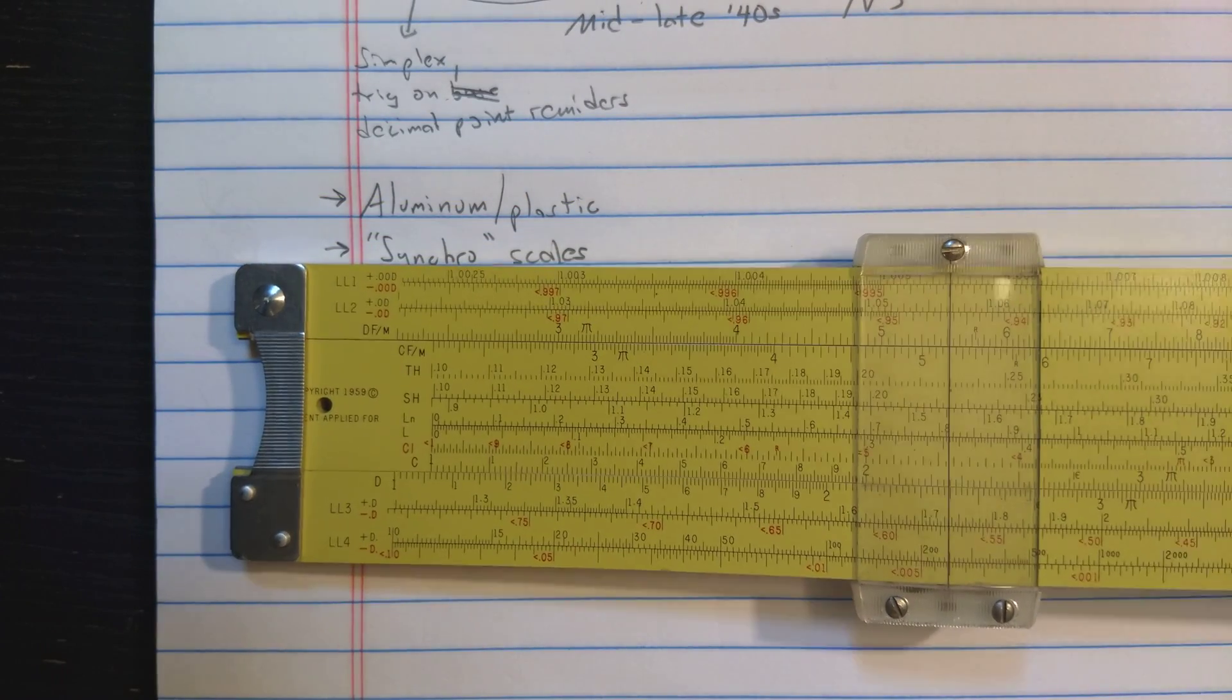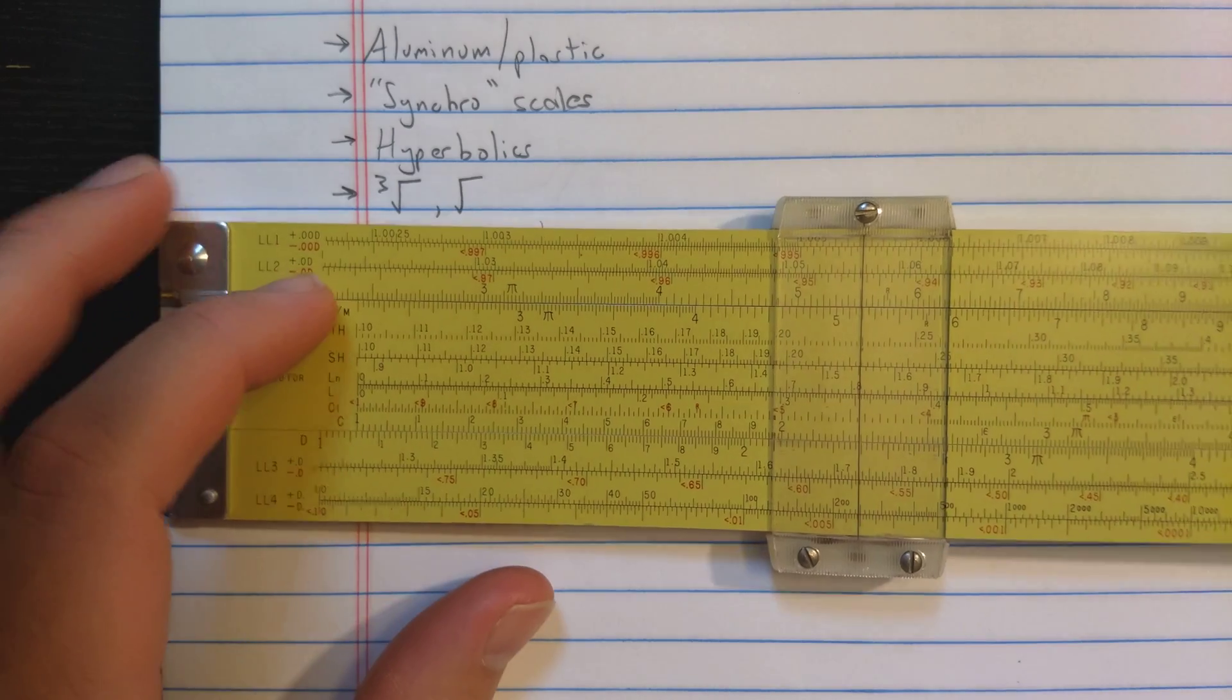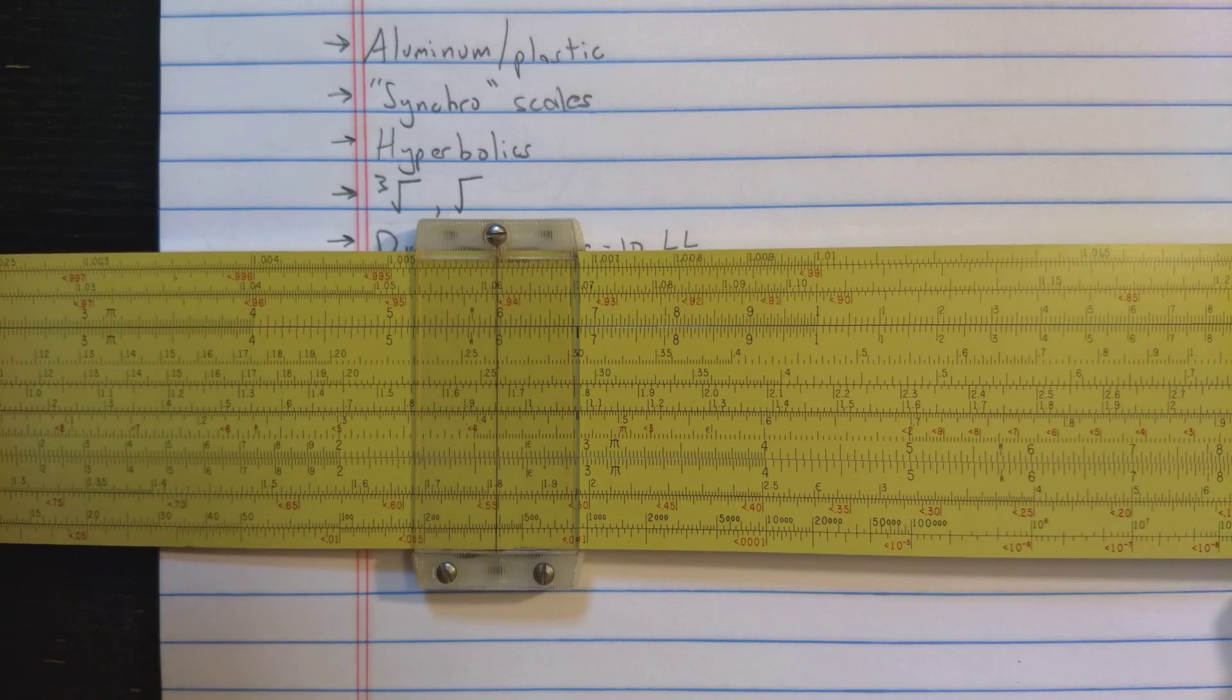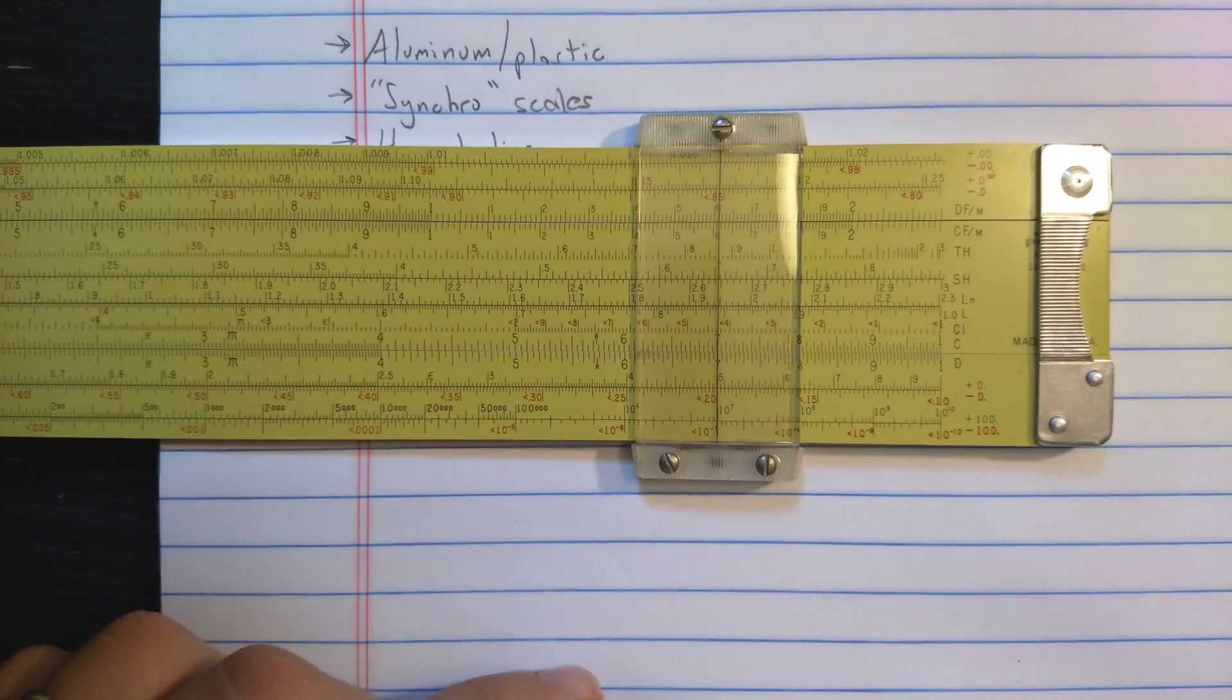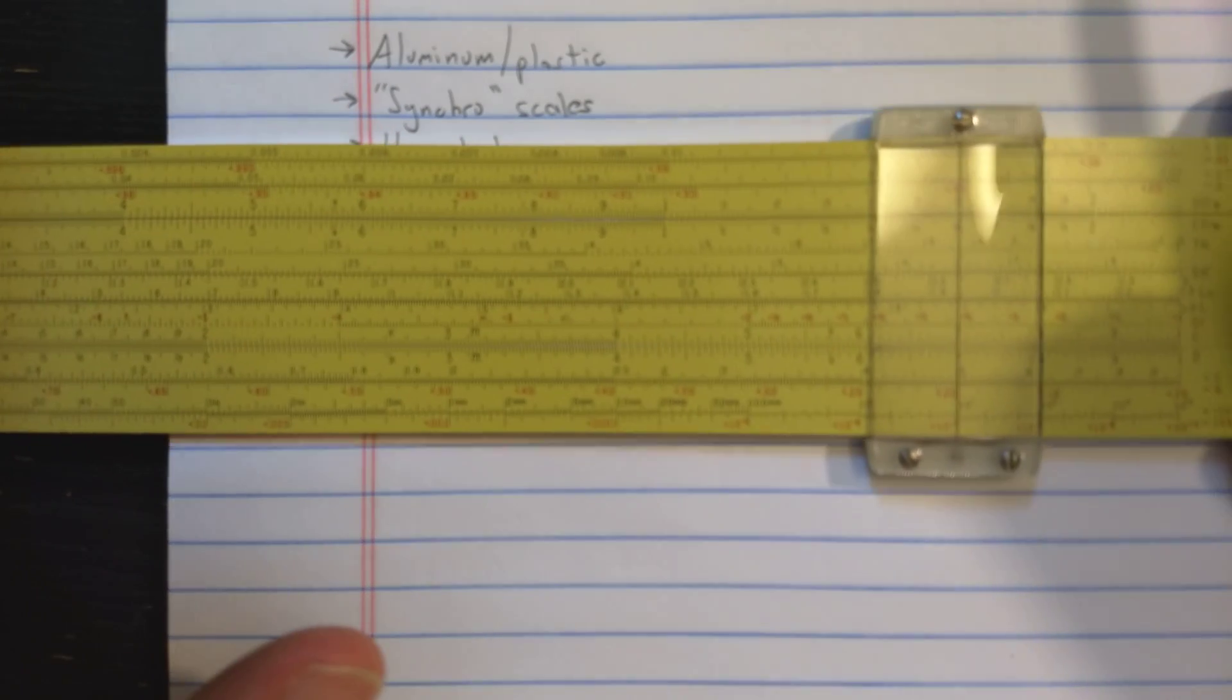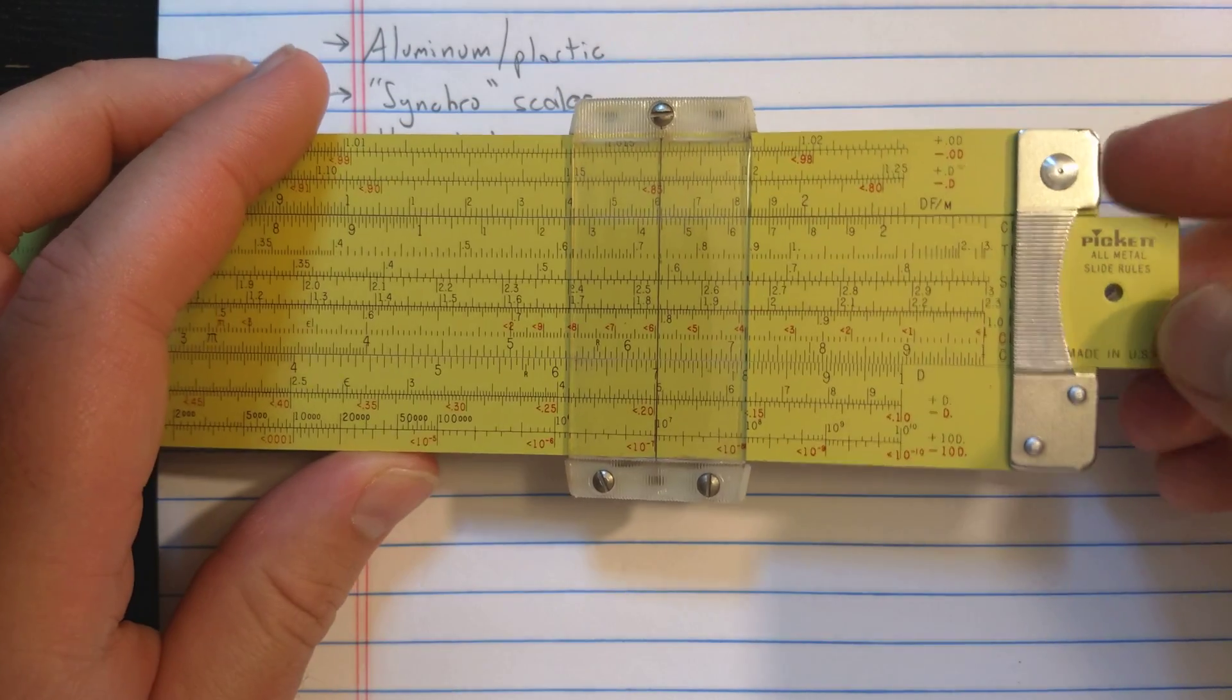Okay, so this is a high-end, log-log, hyperbolic, everything slide rule. It has Pickett's synchro scales, where the log-log scales are back to back. You can read reciprocals directly. So if you were to find on a log-log scale where the 5 is, that's way down here. You read directly adjacent to it, the point 2. Most log-log slide rules arrange their scales differently. Pickett takes a different approach to the arrangement of the log-log scales.